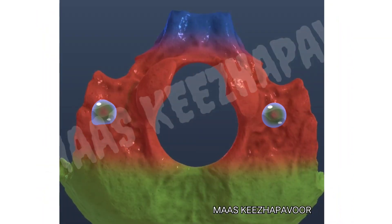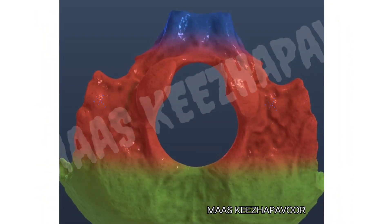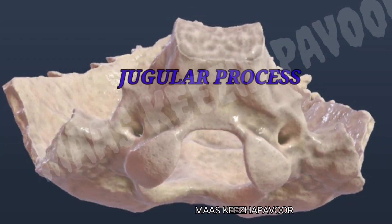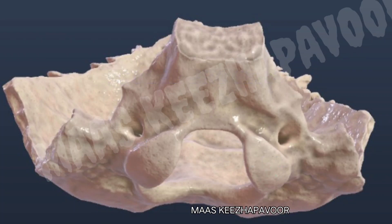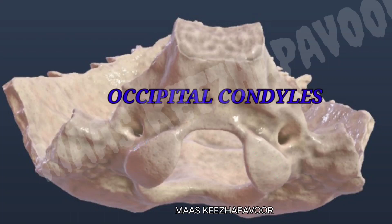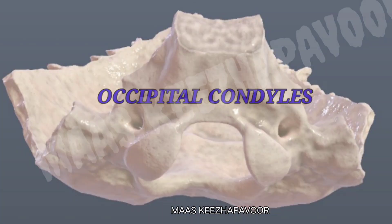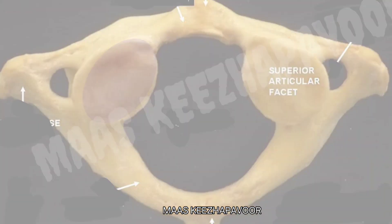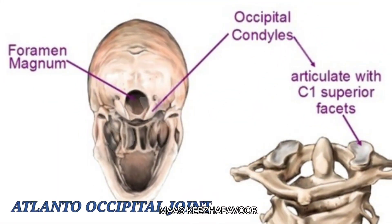The condylar part is situated by the side of foramen magnum. It consists of the condylar part proper and jugular process. The condylar part proper has two kidney-shaped projections on the inferior surface called occipital condyles. These condyles articulate with the superior articular facet of atlas, forming the atlanto-occipital joint.